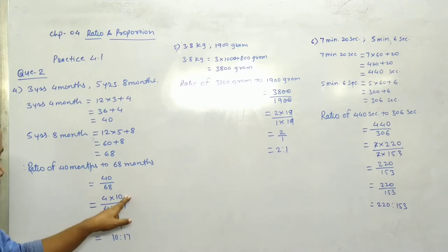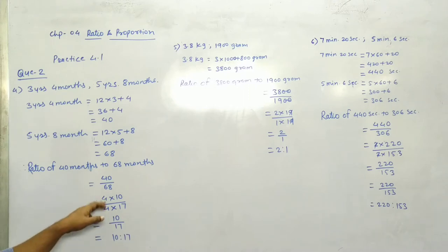17 for the 68, 10 for the 40. 4, 4 cancel, answer is 10 divided by 17. And ratio is 10 ratio 17.